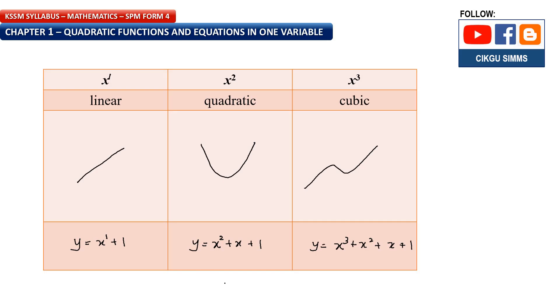In this chapter, we are focusing on x squared — quadratic. The shape of the graph is something like this.